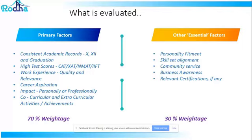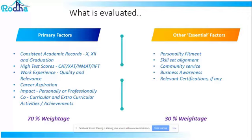One essential factor is personality fitment — who are you as an individual, and do you align with the kind of work you want to do? The admissions committee would never want to take in someone who is extremely rude or short-tempered. Skillset alignment is also important — admissions committees are looking at people with a strong alignment in terms of skillsets. For example, somebody who wants to get into marketing but isn't open to articulating thoughts is not aligned. Somebody who wants to be a financial analyst but fears crunching numbers is not aligned. Skillset alignment is very crucial.